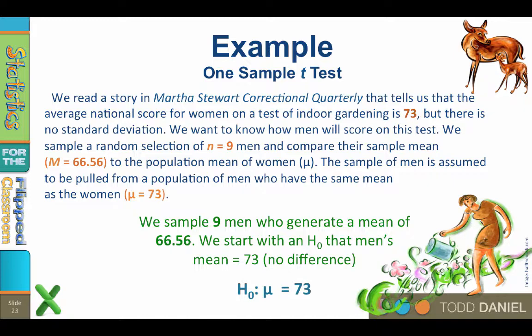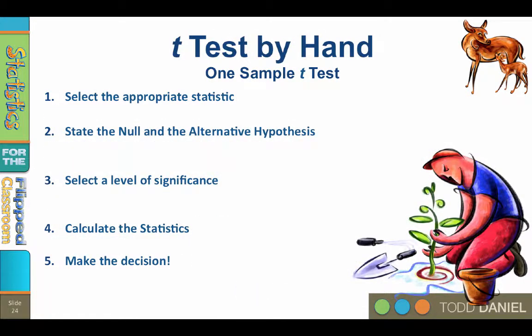Let's work through the five steps of hypothesis testing. Step number one: select the appropriate statistic. In this case, we are comparing a single sample with a mean of 66.56 to a population with a mean of 73, where the standard deviation of the population is unknown. So we will be using the one-sample t-test.